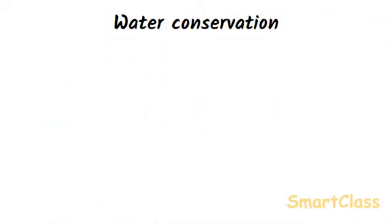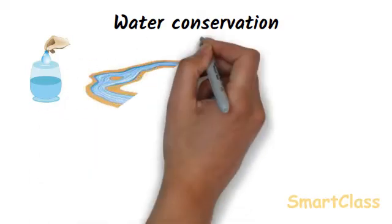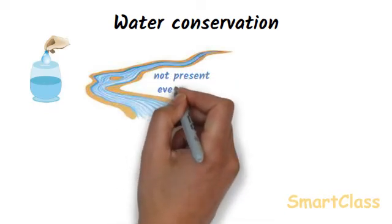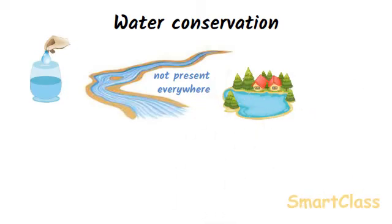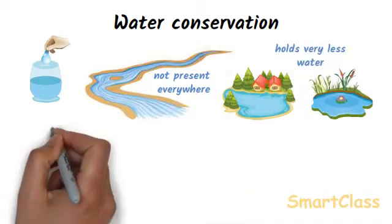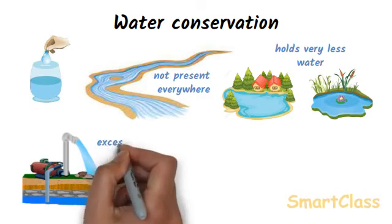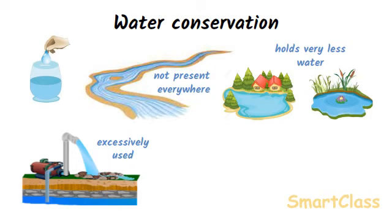Only a small fraction of water available on the earth is suitable for use by human beings, animals and plants — available in rivers, lakes, ponds and as groundwater. Not all areas are near rivers, lakes and ponds cannot hold much water, and groundwater levels decrease drastically when used too much for agricultural and other purposes. Thus the water available for our use is very limited and it is decreasing day by day due to over usage.